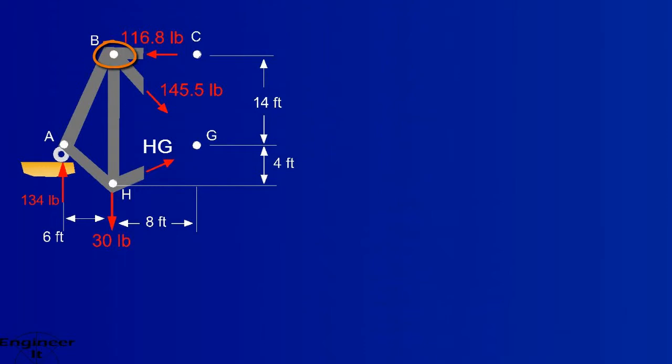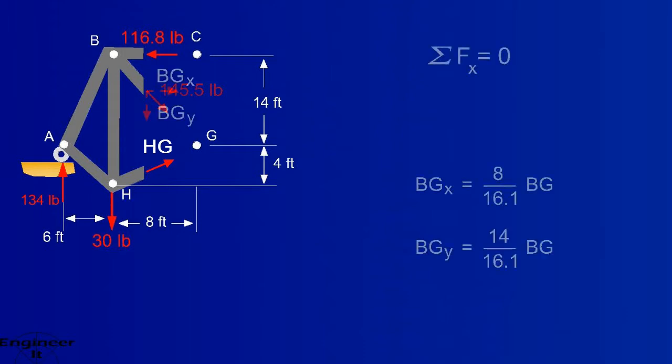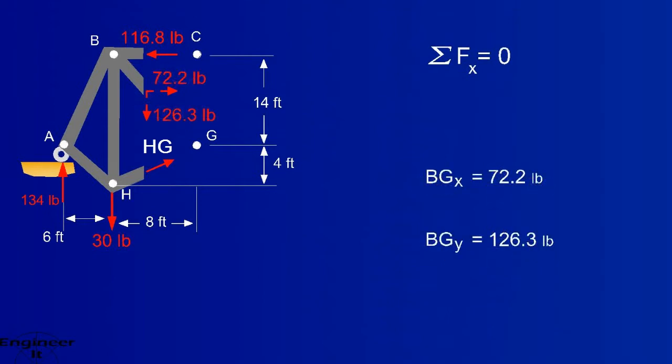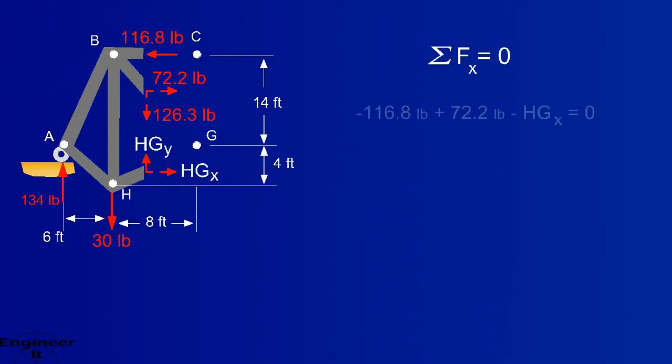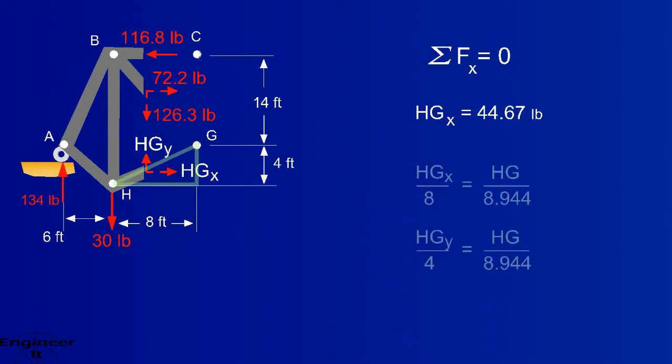Now to find force HG, we could sum moments about another point, but let's sum forces to see how it works. First, compute the components of force BG. Then replace force HG with its components and sum forces in the X direction. Solve for HGX. Now you can use ratios here to solve for both HGY and HG.